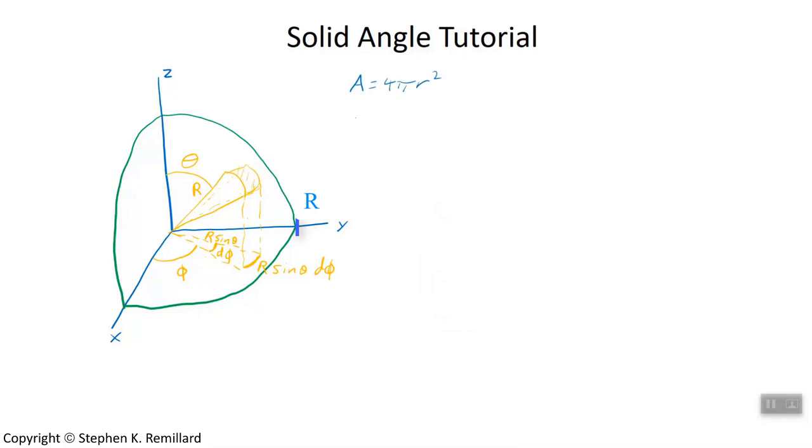Now we can define these edges. This edge right here is an arc length of length r d theta, where d theta is a small increment in theta. And this length right here is defined down here: r sine theta d phi. So we're ready to write down what this area of the conic section is.